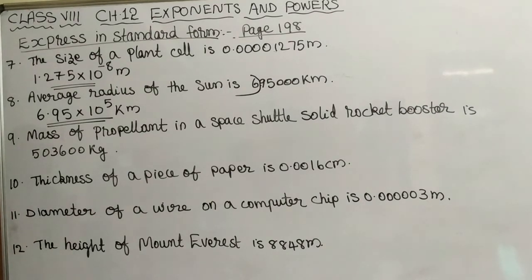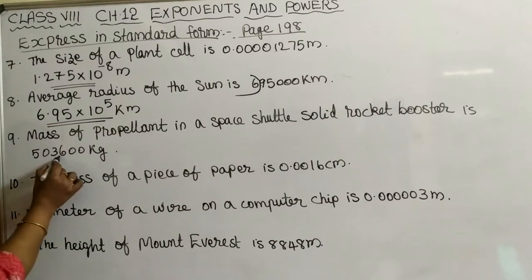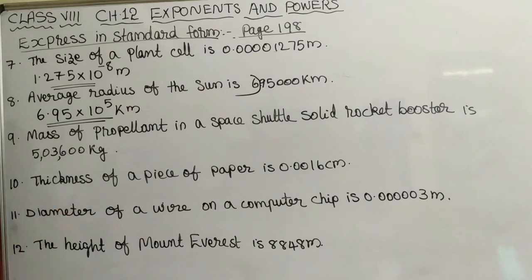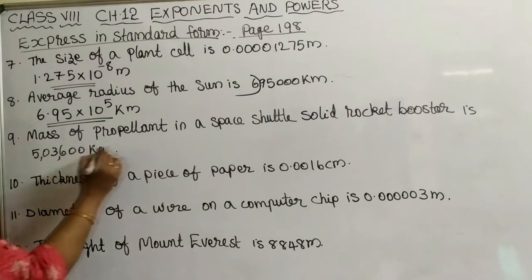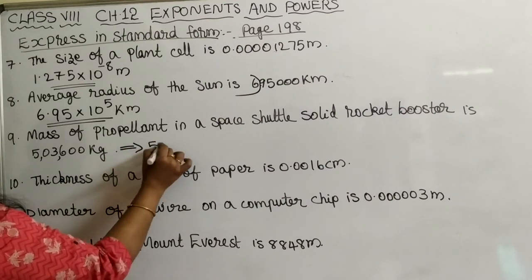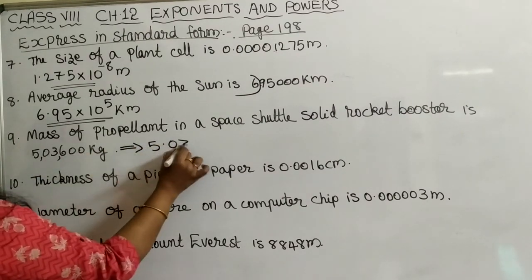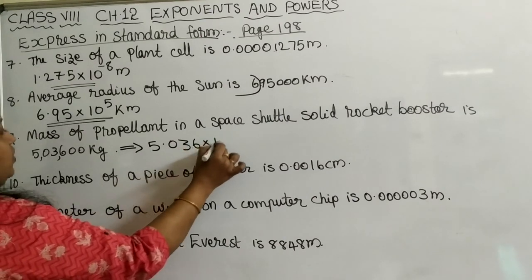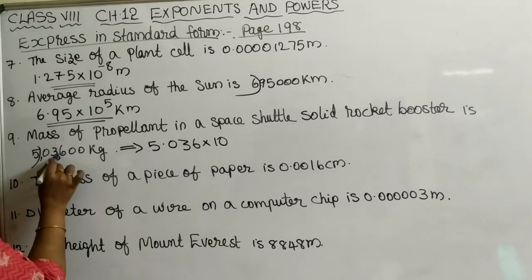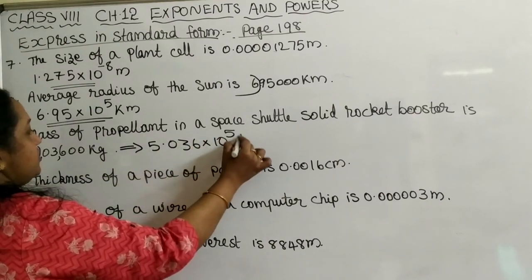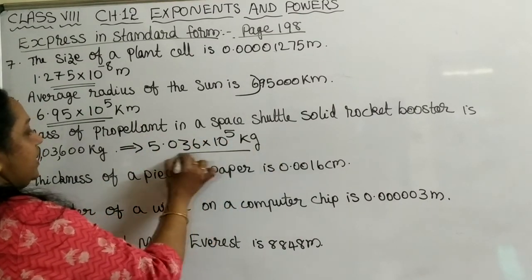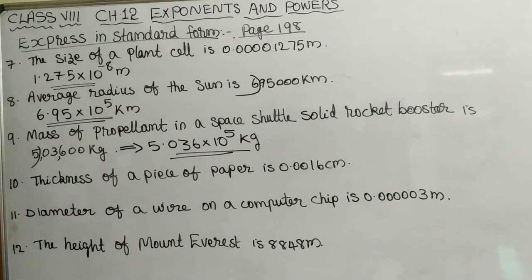Next: the mass of propellant in a space shuttle solid rocket booster is 503,600 kilograms. This is a whole number, so the power of 10 will be positive. After the first digit we put the decimal point: 5.036, into 10 raised to the power. After the first digit, count: 1, 2, 3, 4, 5 — there are 5 digits. So we write 10 raised to 5 kilograms. The answer is 5.036 into 10 raised to 5 kilograms.